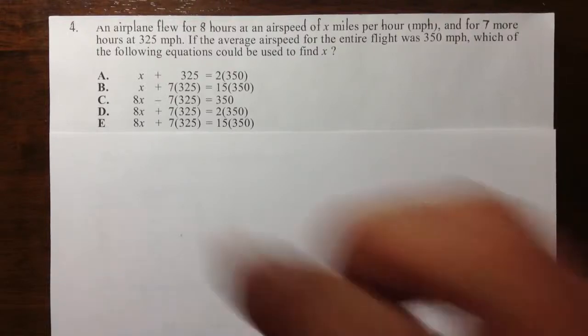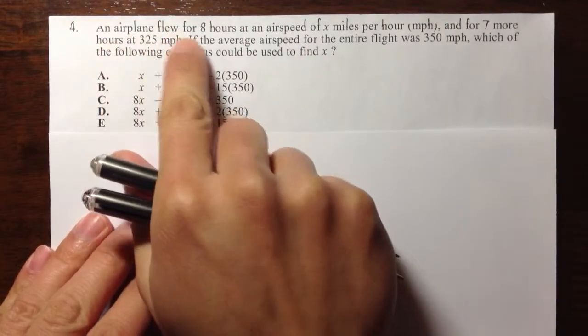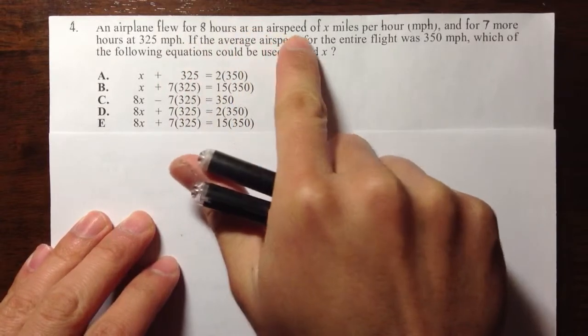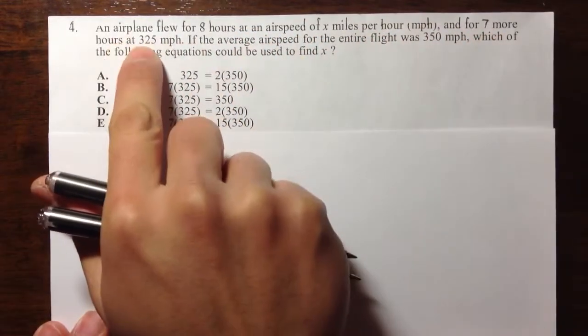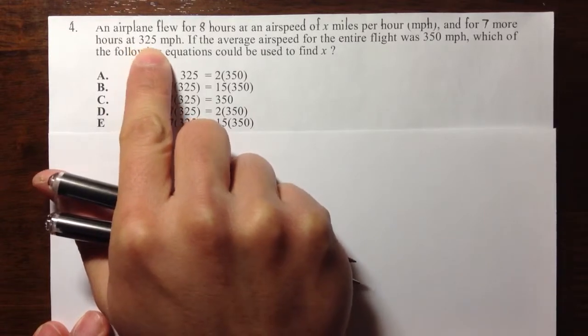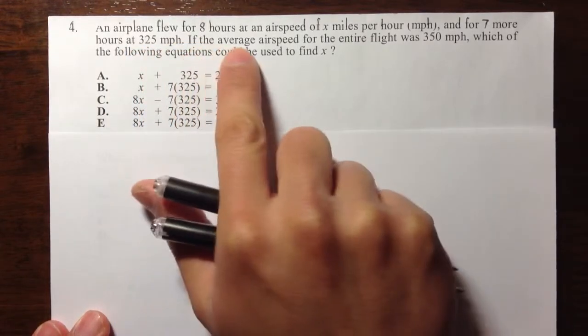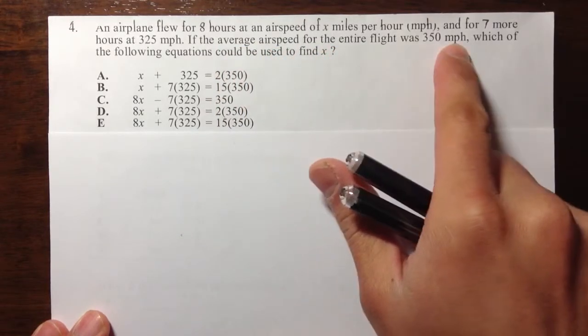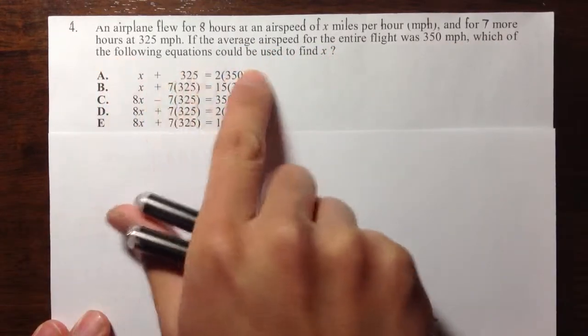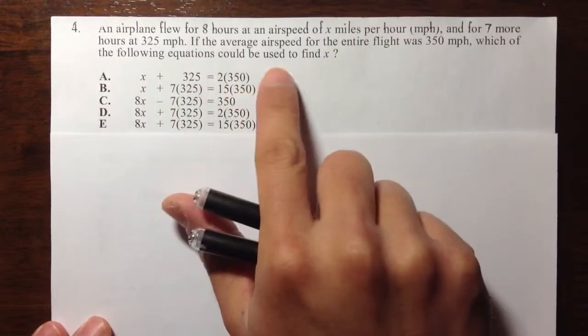Let's take a look at question number four. It says that we have an airplane. It flew for 8 hours at an airspeed of x miles per hour, and then another 7 more hours at a speed of 325 miles per hour. And it says that if the average speed of the entire flight was 350 miles per hour, which of the following equations could be used to solve for x?